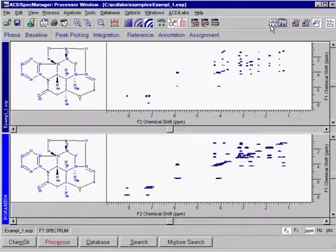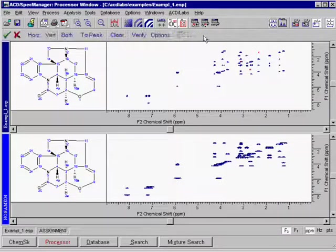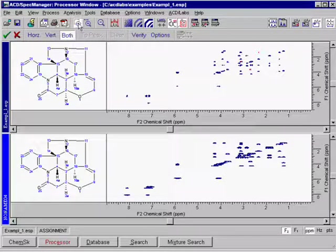To assign peaks to the structure, enter the Assignment mode. Zoom in on an area of interest in the Experimental Spectrum.